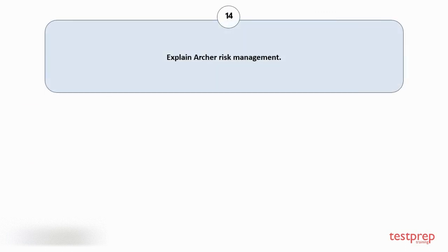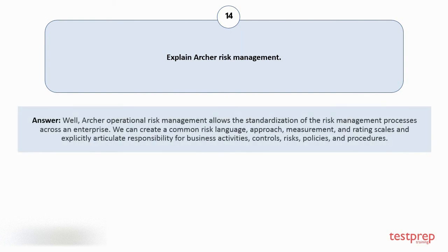Question number 14: Explain Archer risk management. Archer operational risk management allows the standardization of the risk management processes across an enterprise. We can create a common risk language, approach, measurement, and rating scales and explicitly articulate responsibility for business activities, controls, risks, policies, and procedures.